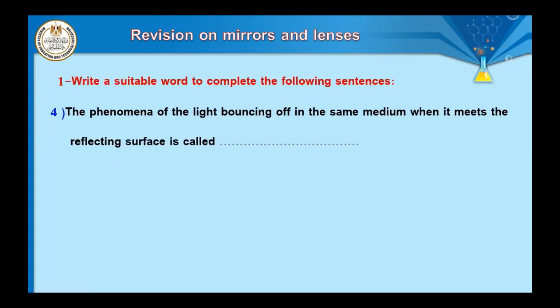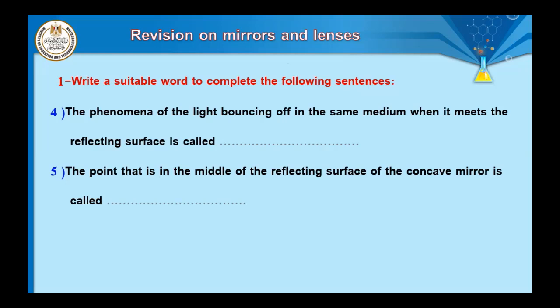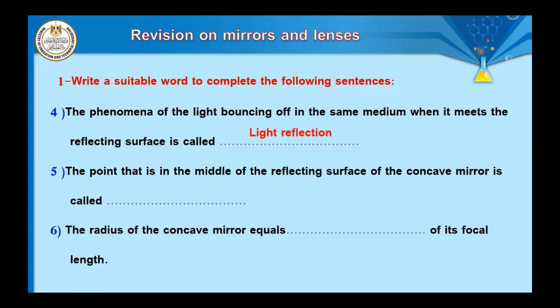Question number four: the phenomenon of light bouncing off in the same medium when it meets a reflecting surface is called ___. We know that light has many properties: it travels in a straight line, it reflects when it falls on a reflecting surface, and it refracts when it passes through two different transparent mediums. This phenomenon is called light reflection — that is the correct answer.